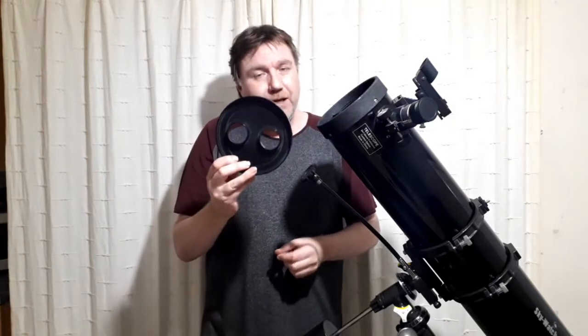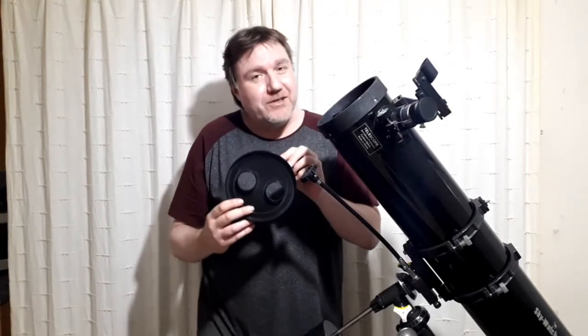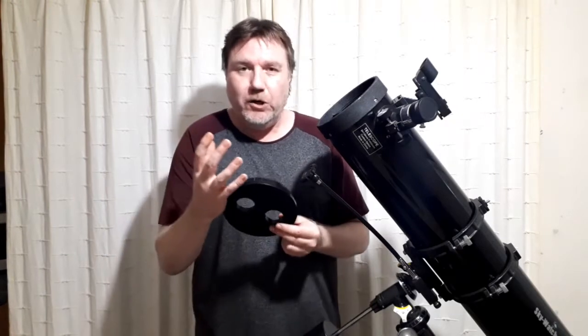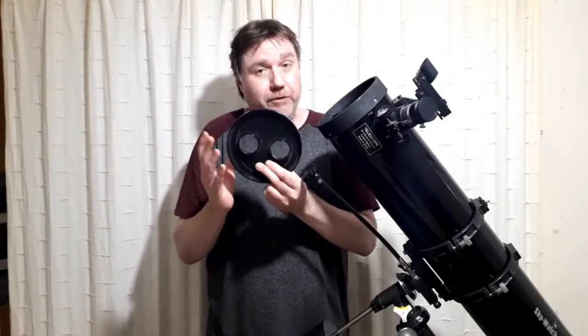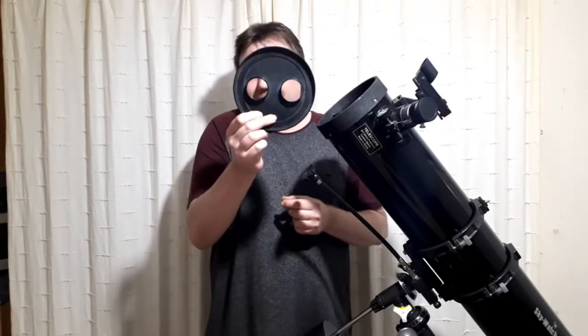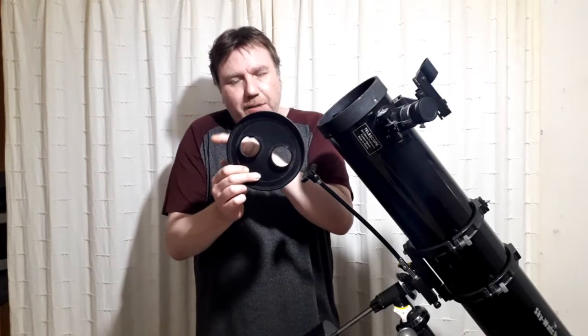You can do exactly the same with your telescope and your dust cover. And like I say, if you haven't got one, make it out of cardboard exactly like that. But if you're going to make it out of cardboard, you want to make it just slightly bit bigger than the circumference of your telescope.